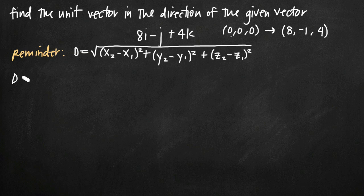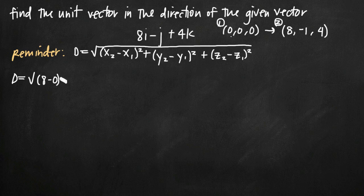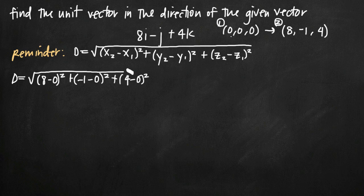We're going to use the distance formula to calculate the length of our original vector. Distance equals the square root of (x₂ - x₁)² + (y₂ - y₁)² + (z₂ - z₁)². Taking (8, -1, 4) as our second point and (0, 0, 0) as the first, we get the square root of (8 minus 0) squared, plus (negative 1 minus 0) squared, plus (4 minus 0) squared.